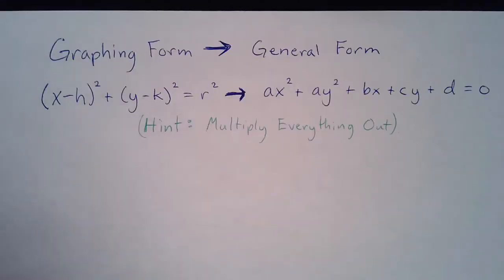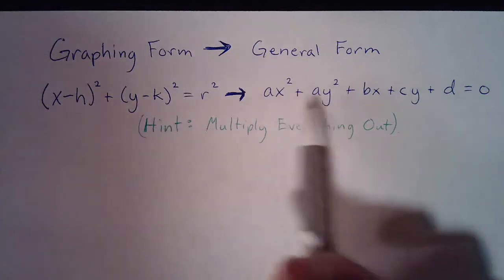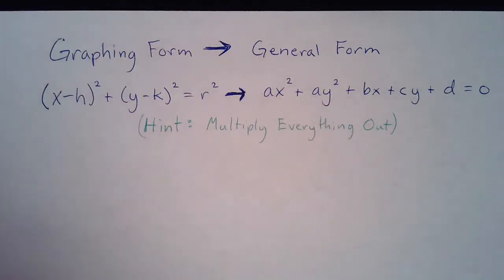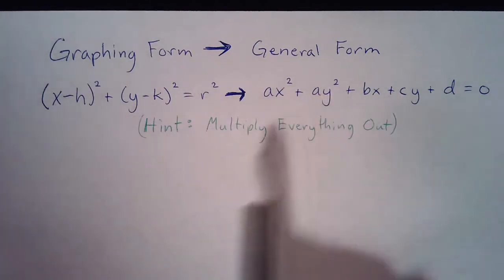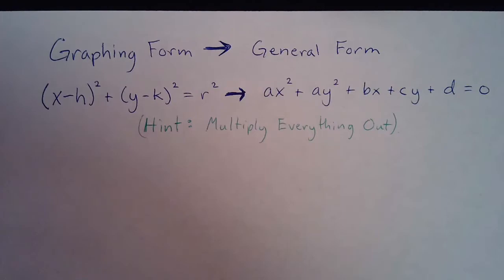Alright, so we're going to start by talking about going from graphing form to the general form or standard form. We've already talked about what the graphing form looks like and what the general form looks like. But to go from graphing form to general form, the only thing that we need to really do is to multiply everything out. And I think that's best done by showing an example.